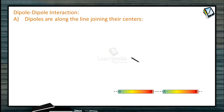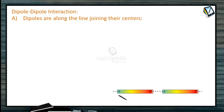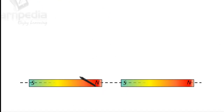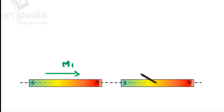First, let us study about Dipole-Dipole Interaction. Here we have taken two dipoles. The dipoles are along the line joining their centers. This is the North Pole and South Pole of the first bar magnet, and North and South Pole of the second bar magnet. The magnetic moment of the first bar magnet is M1, and the magnetic moment of the second bar magnet is also in the same direction, M2.